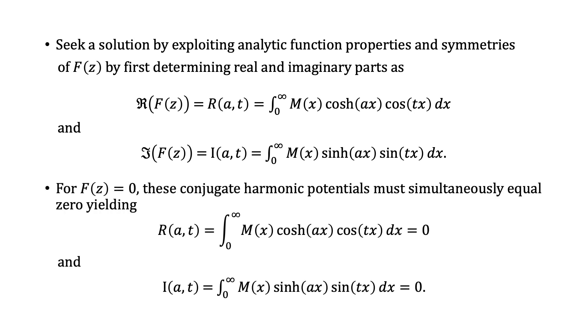For F(z) = 0, these conjugate harmonic potentials must be simultaneously equal to 0, yielding R(a,t) = 0 and I(a,t) = 0.